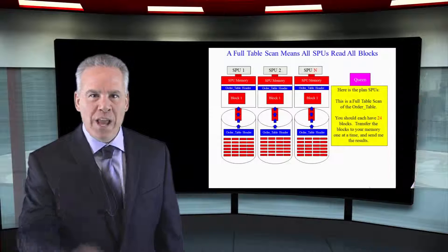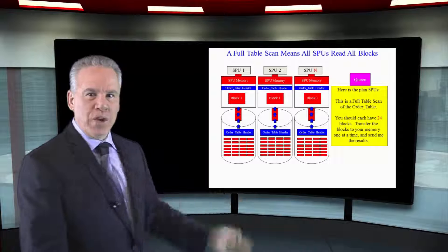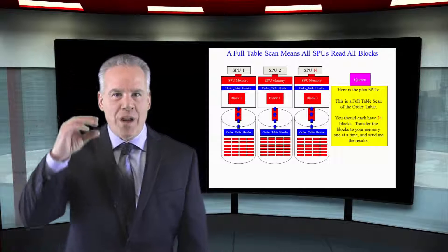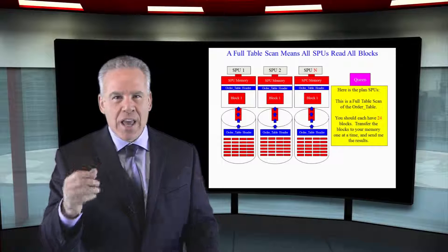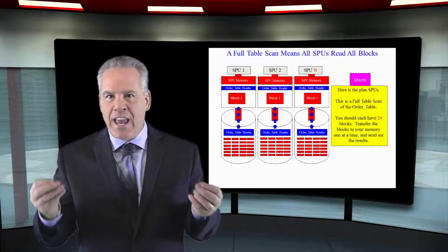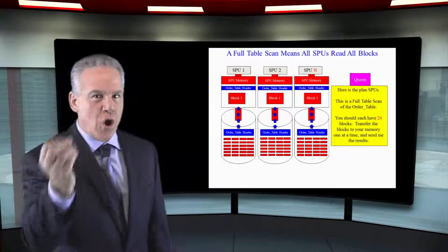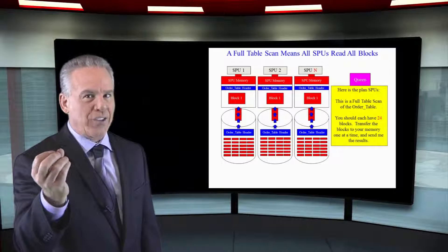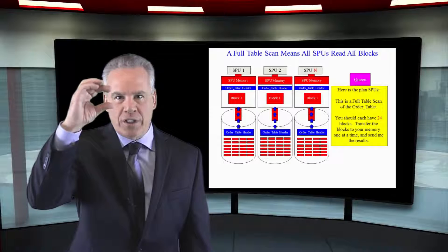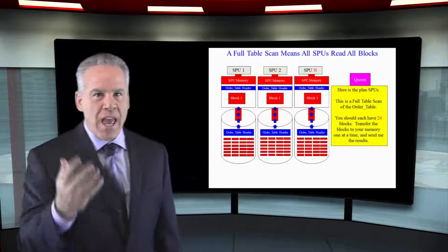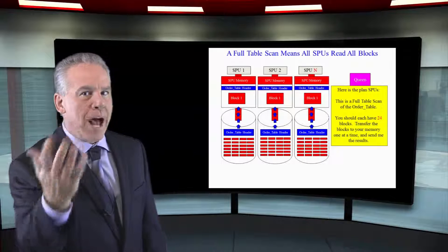Holy moly. We are going to have to do a full table scan here. Extent one, extent two, extent three. On every single SPU will be read simultaneously. That is why Netezza is able to analyze so much data when you ask it to, because of the parallelism and because of the beautiful extents moving into memory as fast as possible.